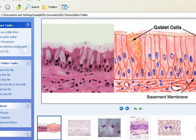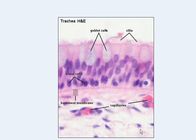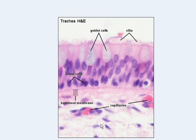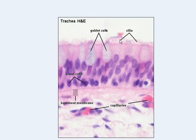Here's another picture that also portrays this. Here you can see the goblet cells, the basement membrane, and this is the space in between the other side of columnar epithelium. The goblet cells are right here within the open space. You can tell this is pseudostratified columnar epithelium because it has cilia — and that's how you can tell the difference between this and simple columnar.